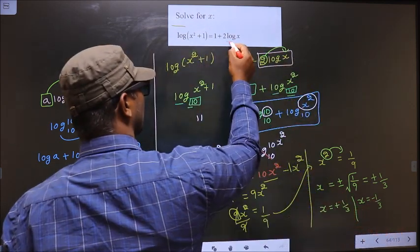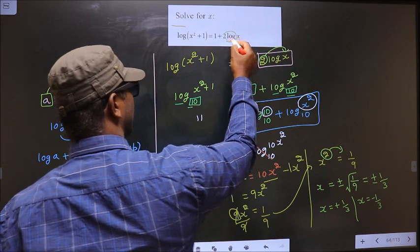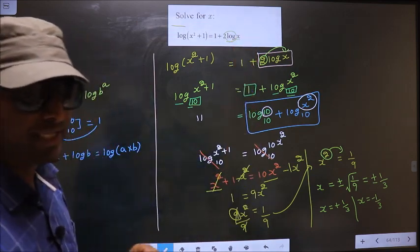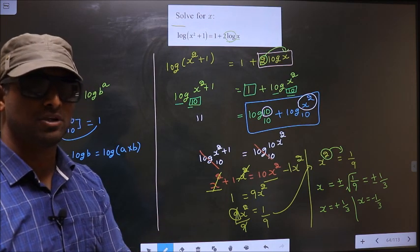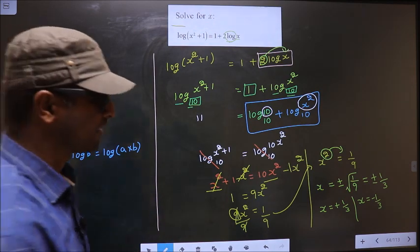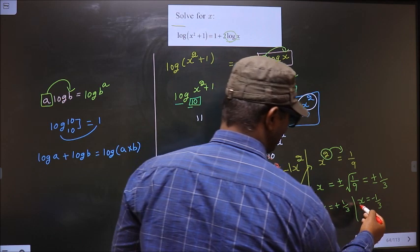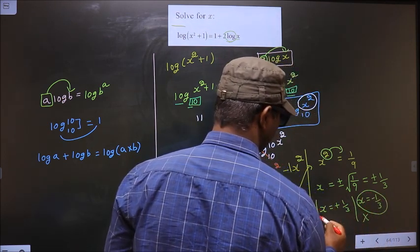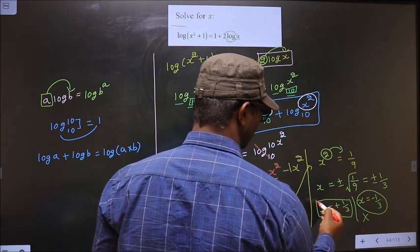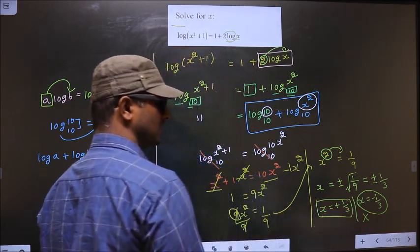Now on x, log is applied. That means x has to be a positive value. We should reject the negative value for x and accept only the positive value. So this is our answer: x = 1/3.